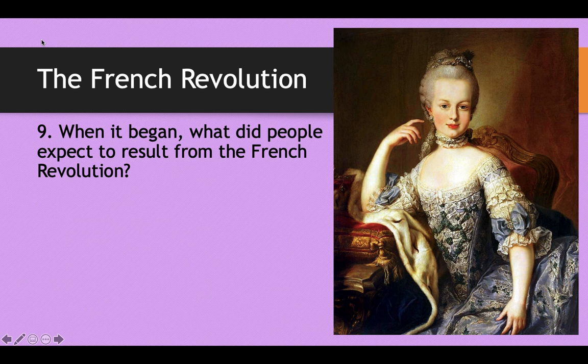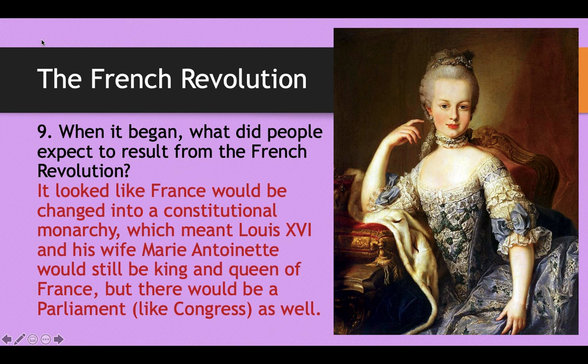When this began, people expected France to change into a constitutional monarchy — similar to what enlightened despots had created in Europe, giving their people some rights while retaining some power for themselves. This would mean that Louis XVI and Marie Antoinette would still be King and Queen of France, but there would also be a parliament, kind of like Congress.